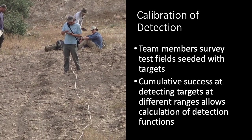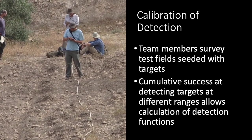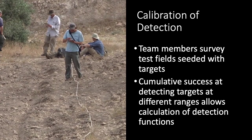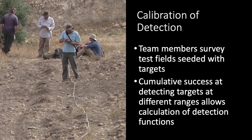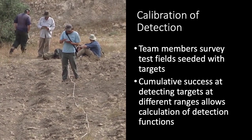However, for most kinds of survey, the only way for us to determine the detection functions is by experiment. For example, by calibrating our field crews on fields that we have sown with artifacts in known locations.